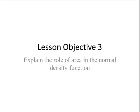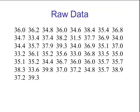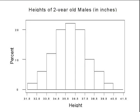Lesson objective number 3. The data on the next slide represents the height in inches of a random sample of 52 two-year-old boys. Draw a histogram using a lower class limit of 31.5 and a class width of 1. Do you think the variable heights of 2-year-old boys is normally distributed? From the histogram, we see that the heights of 2-year-old males for this sample is bell-shaped and symmetric, so we would say it is normally distributed.